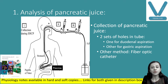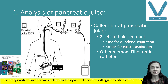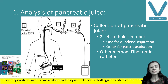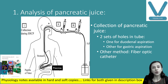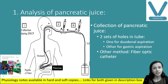The catheter has two sets of holes: one to collect pancreatic juice via duodenal aspiration, and the second to collect gastric juice via gastric aspiration. Another method that can also be used is a fiber optic catheter, which is introduced under direct vision into the pancreatic duct to collect the pancreatic juice.